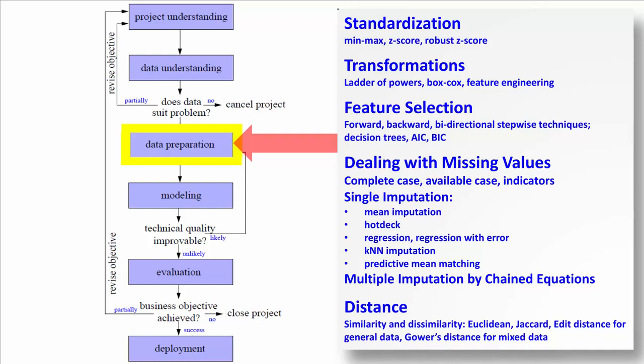We've come up with techniques for dealing with missing values, including complete case analysis, available case analysis, and using indicator variables. We also talked about single imputation methods: mean imputation, hot deck, regression, regression with error, k-nearest neighbors imputation, predictive mean matching, and so on. Then we improved on that with multiple imputation using chained equations, the MICE package in R.